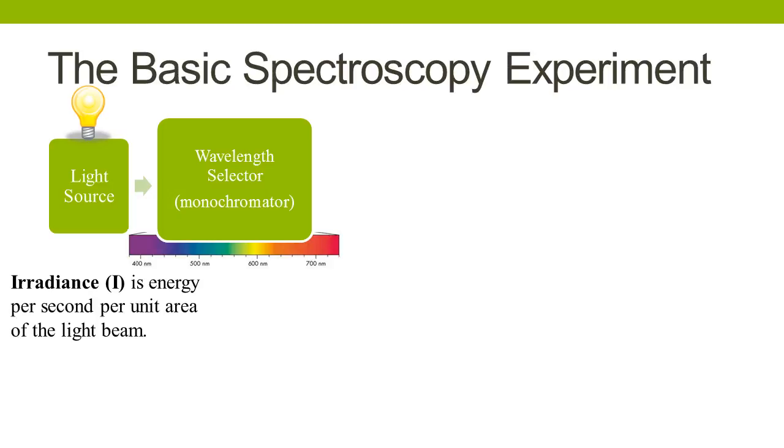If we're using light in the visible range, the spectroscopy experiment is sometimes also called colorimetry, because the samples will be colored. You can also do spectroscopy with non-visible light, for example with ultraviolet or with infrared light, but we aren't able to see that with the naked eye.